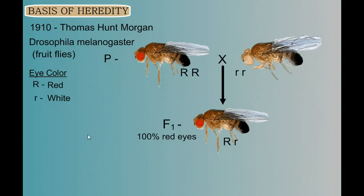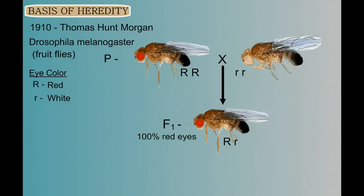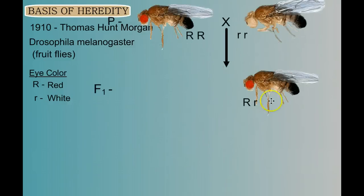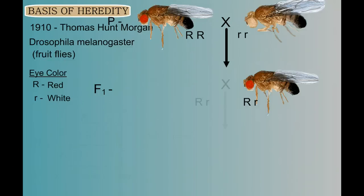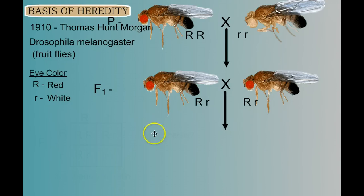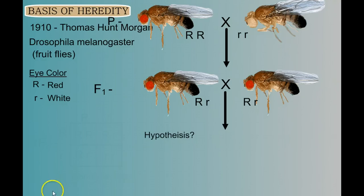So far, so good — nothing unusual here. But now let's take two of our F1 flies and cross them. We have these heterozygous or hybrid fruit flies in our F1 generation, and we make this cross. I want you to stop the video and give me what you think the results are going to be — what do you hypothesize in the F2 generation?